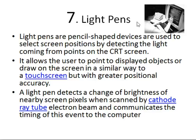The seventh and last one is light pens. Light pens are pencil-shaped devices used to select screen positions by detecting light coming from points on the CRT screen. It allows the user to point to displayed objects or draw on the screen, similar to a touch screen but with greater position accuracy, since a pen tip is smaller than a finger.